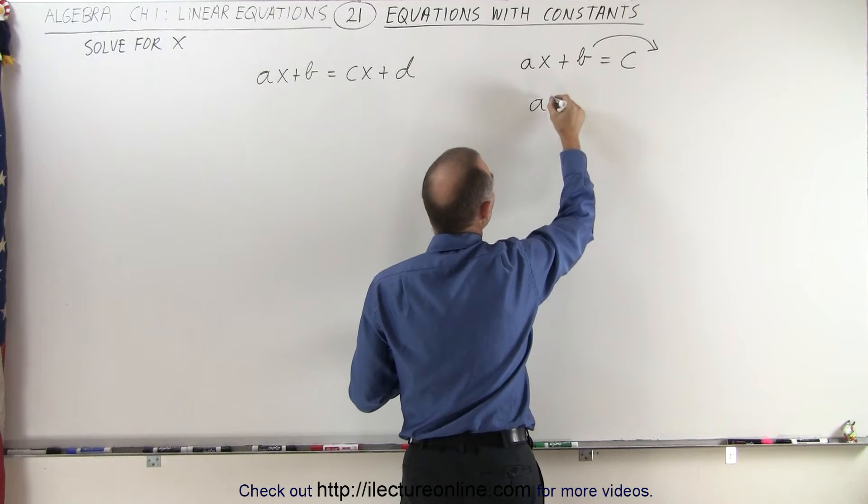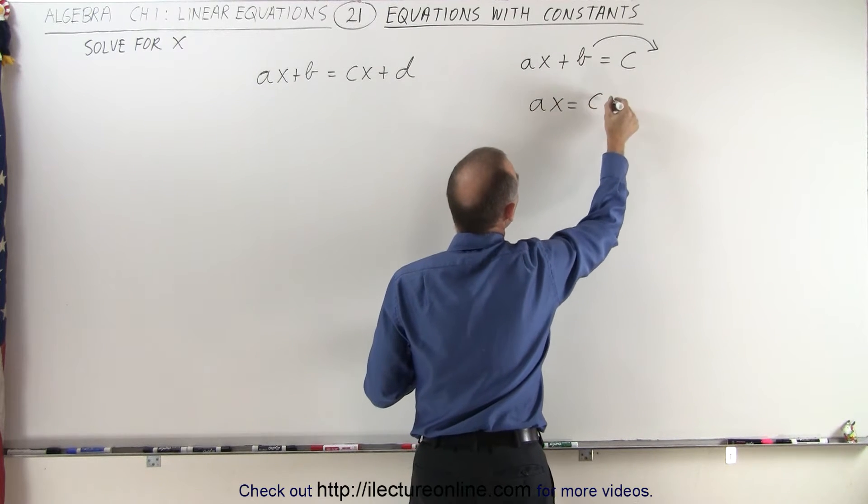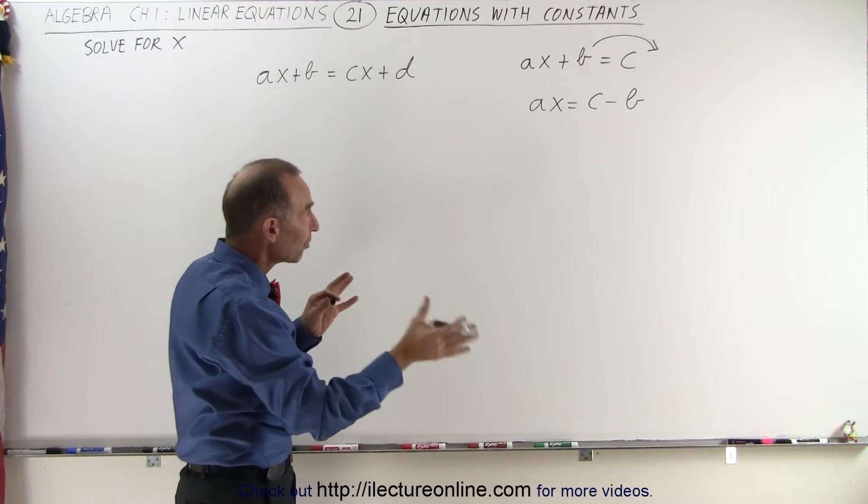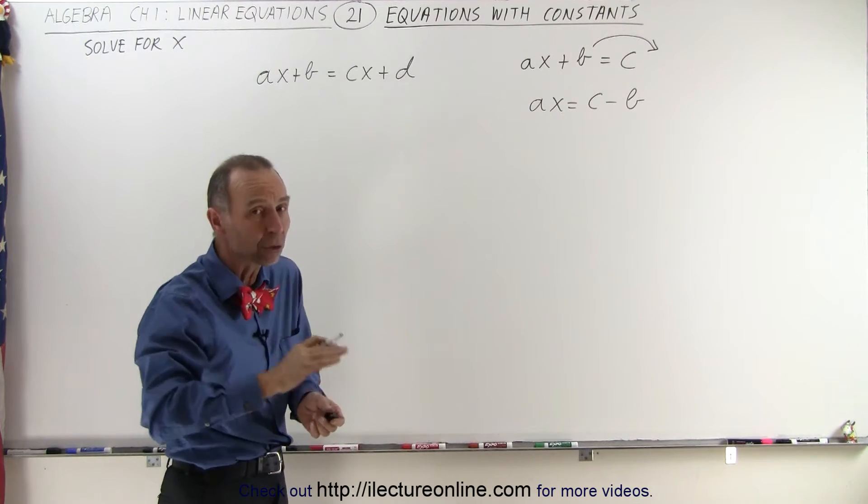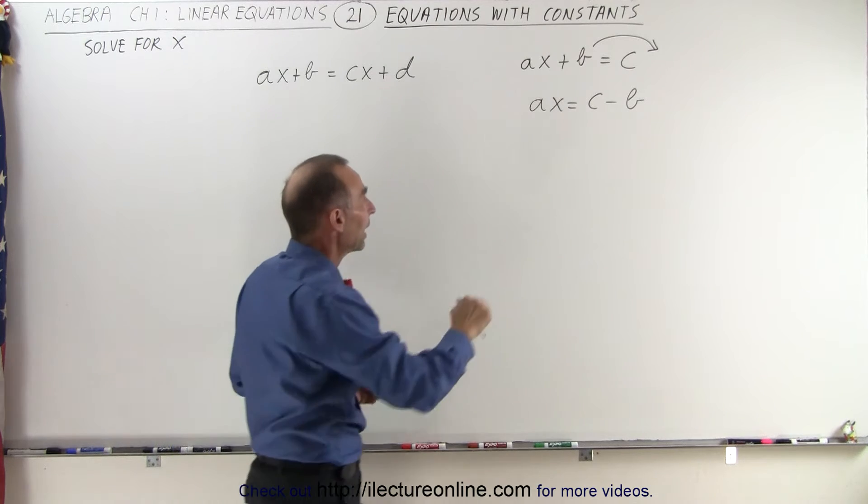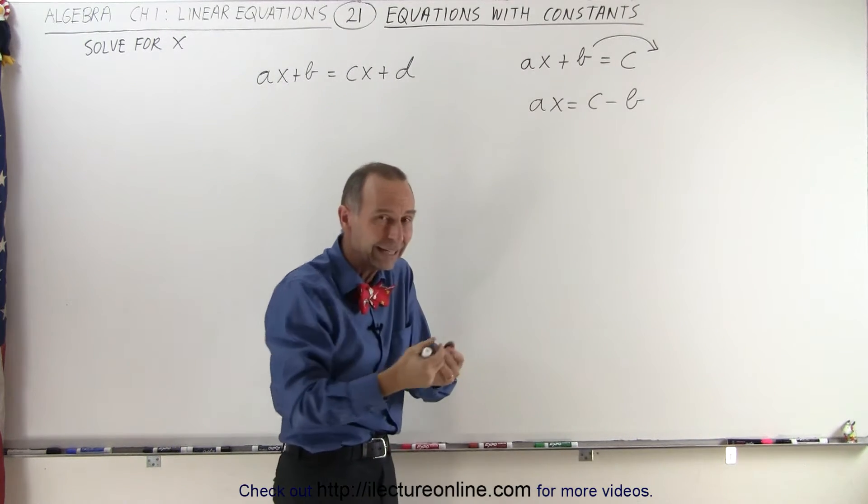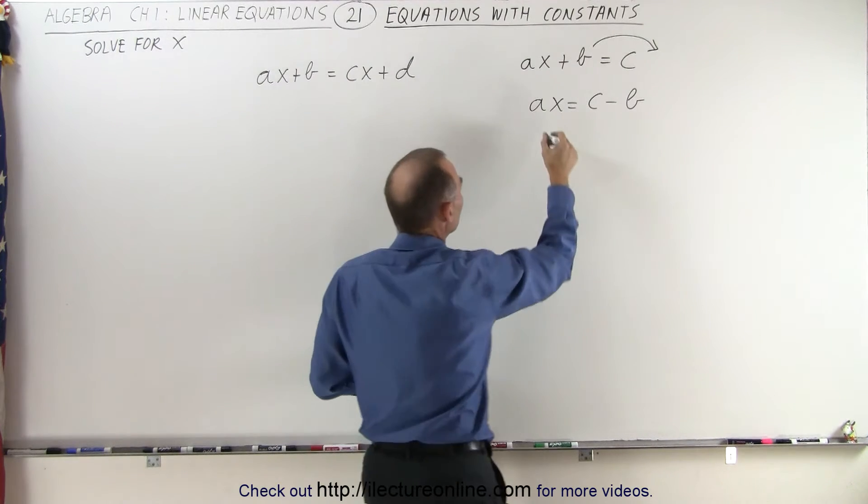So this becomes AX is equal to C minus B. The next step is to divide both sides of the equation by the numerical coefficient in front of the variable X. In this case the numerical coefficient is A. Even though it's a letter, it represents a constant, a number.